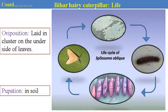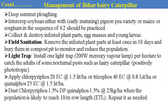Eggs are laid by the female in clusters, well-arranged — this can be observed in the field. The larvae have a characteristic appearance with hairs all over the body. The pupa is found in the soil. The life cycle is completed in a very short time. The same recommendations apply: deep plowing, intercropping with early maturity varieties like pigeon pea or sorghum in a 4:2 or 2:2 sequence should be practiced to minimize pest attack. Collect and destroy infested plant parts, egg masses, and larvae. Field sanitation — removal of infested plant parts at least once in 10 days and bury them in a compost pit to monitor and reduce the population. Pheromone traps can be installed. Chlorpyrifos, quinalphos, or phenthoate can be applied over the plant before the start of infestation. Dusting of chlorpyrifos or phenthoate is also effective against this pest.